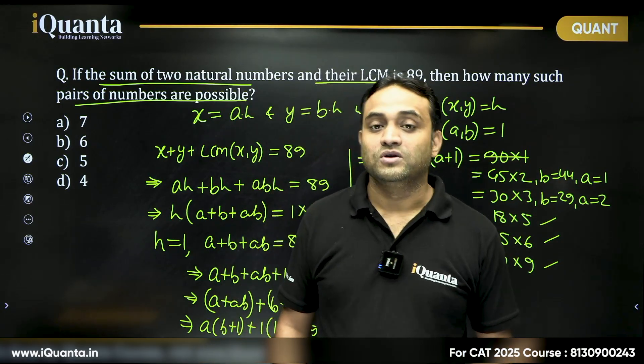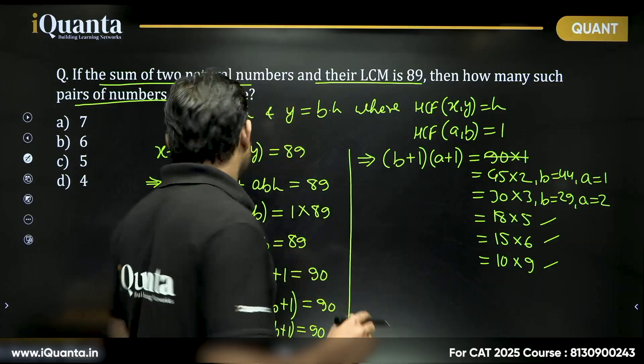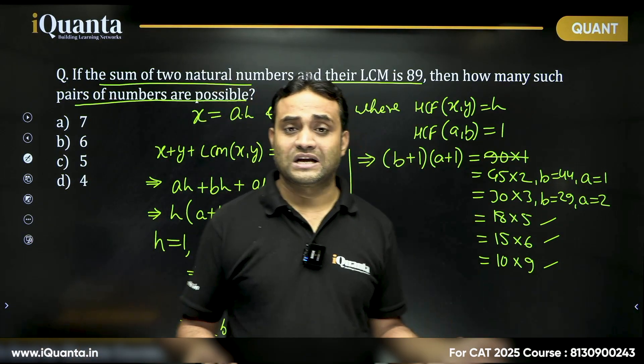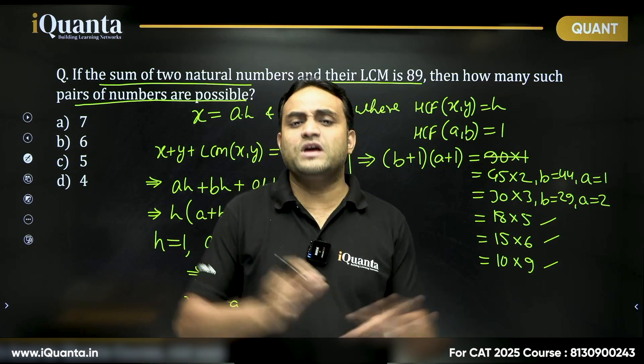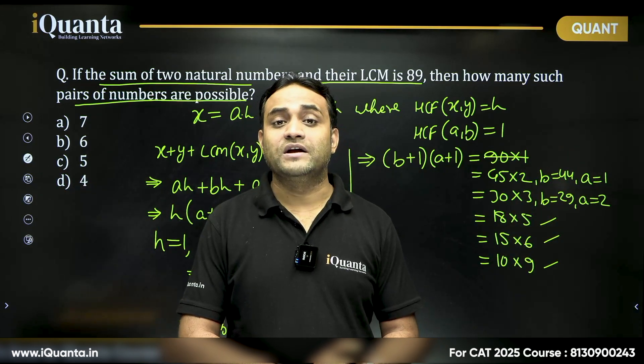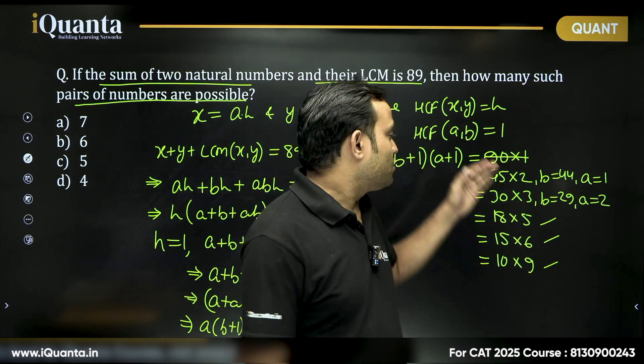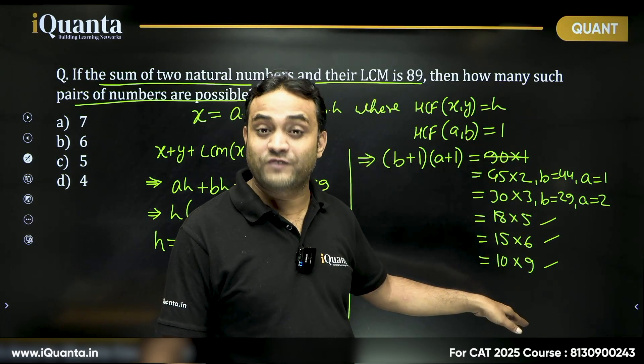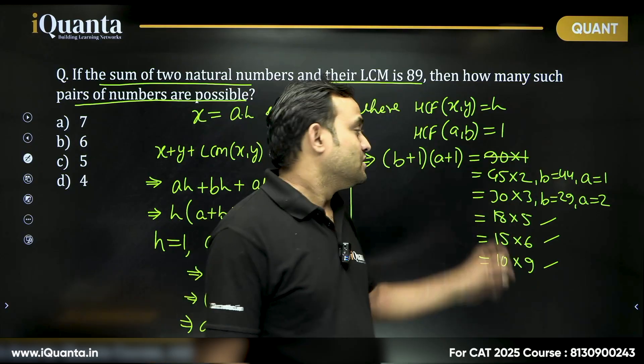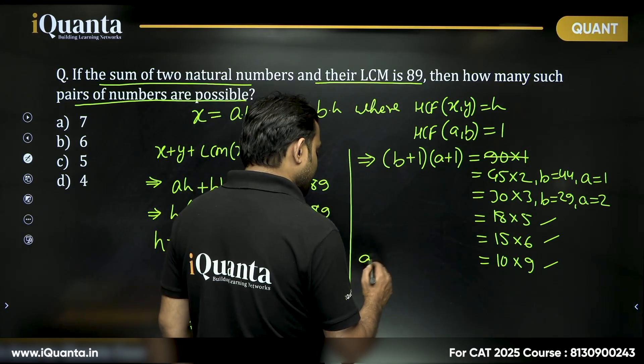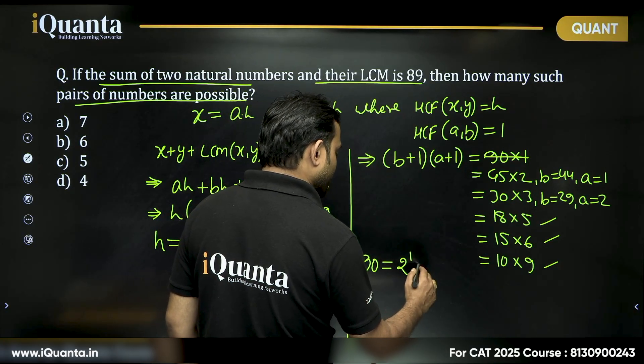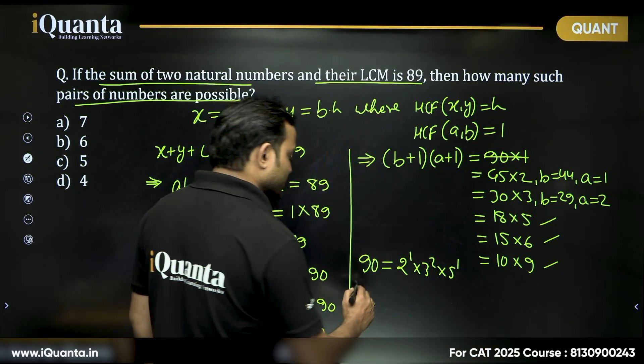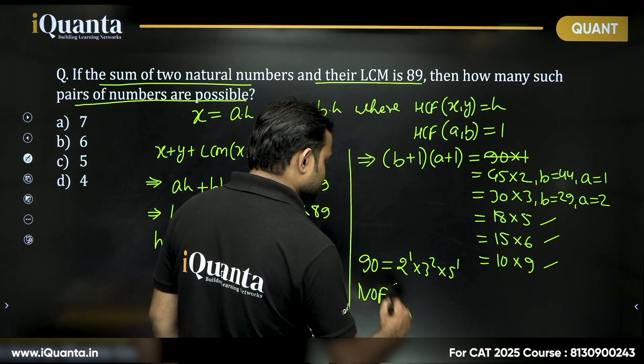But before we mark the option, we need to understand if this number was bigger, let's say way bigger than 90, how would we find the answer? In how many ways can 90 be written as product of 2 of its factors? Can I say 90 can be written as 2^1 times 3^2 times 5^1? What will be the number of factors of 90?